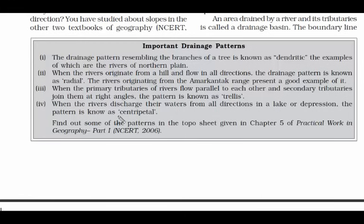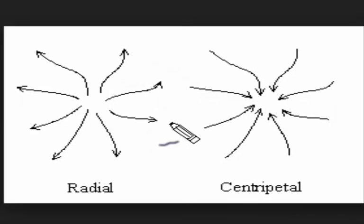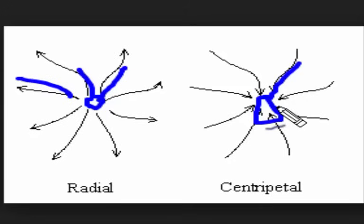The fourth and last type of drainage pattern is called centripetal. Centripetal force makes a body follow a circular path directed towards a fixed center point. So just as in the radial pattern everything goes away from the center, in the centripetal pattern everything comes toward the center. There is usually a small pond or lake at the center, and all the tributaries fall into it to form that lake.